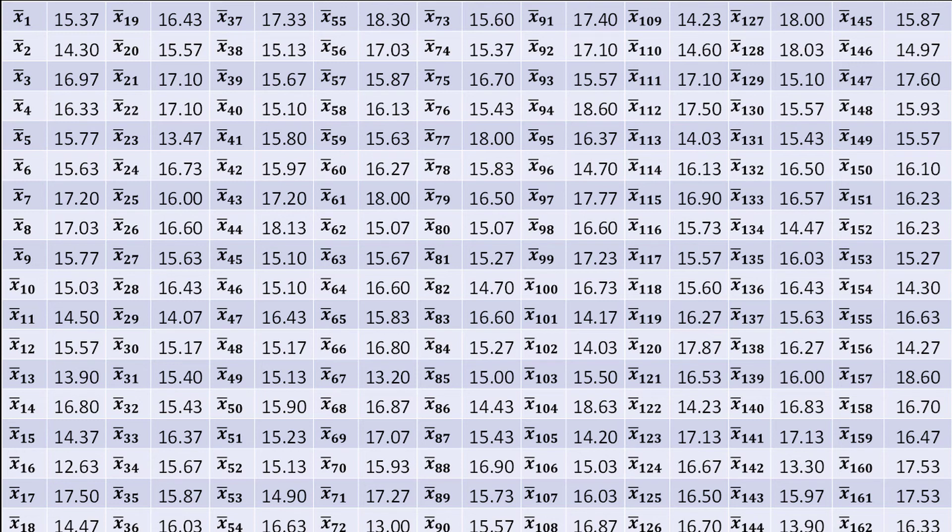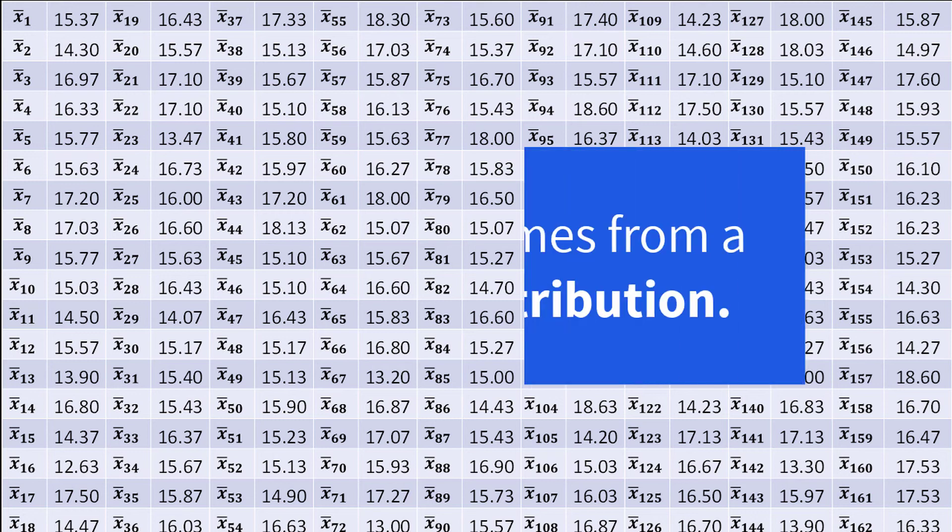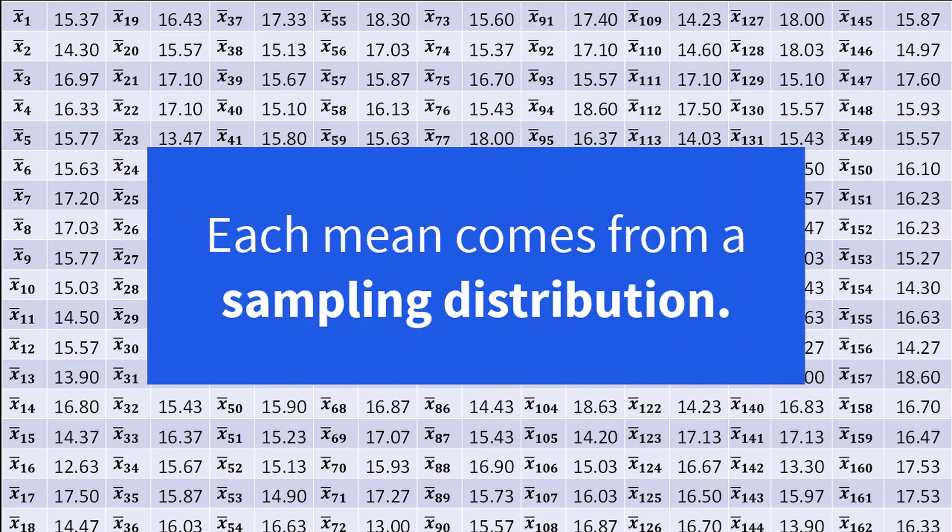Notice that even though each sample mean was taken from the same population, they are different due to the nature of sampling. Each sample mean can be thought of as coming from a distribution of sample means if we were to treat each value as an individual observation. This is what we call a sampling distribution, which is the basis of the central limit theorem.